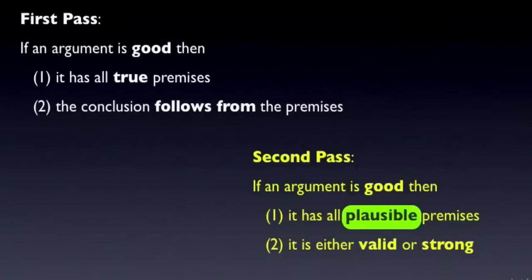We're using plausible in the truth condition to highlight the fact that a given premise might be regarded as true by one audience, but as false by another. What we want are premises that are regarded as true by the target audience of the argument.